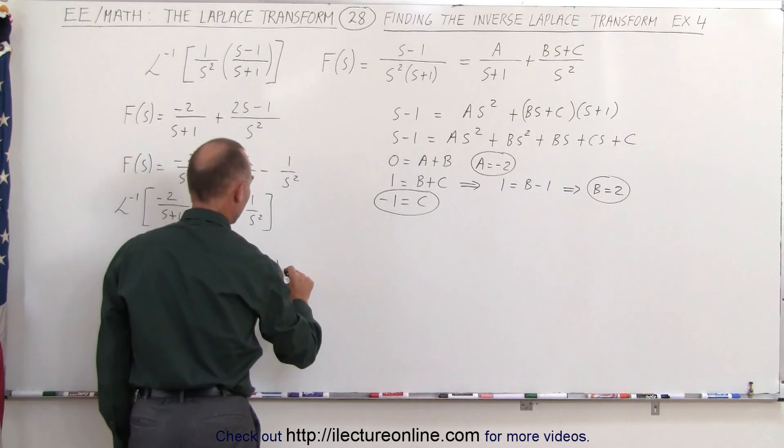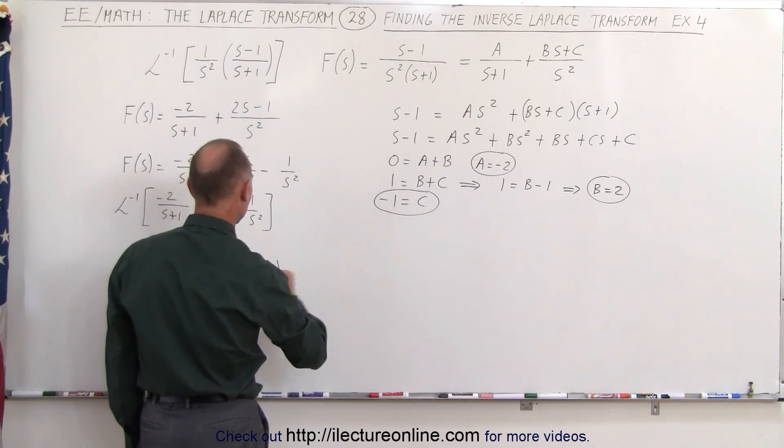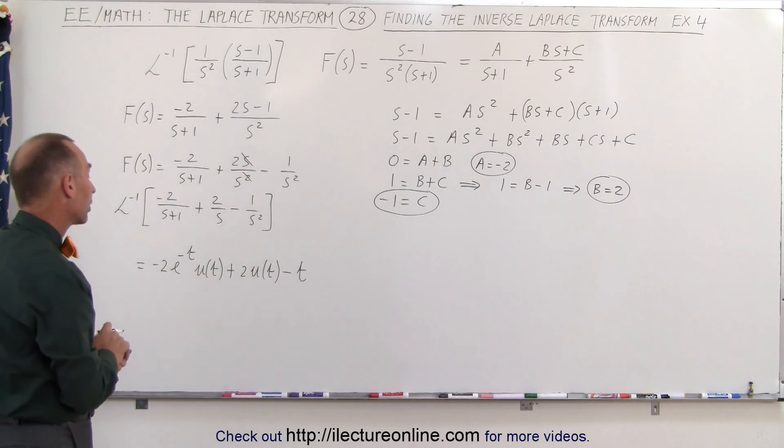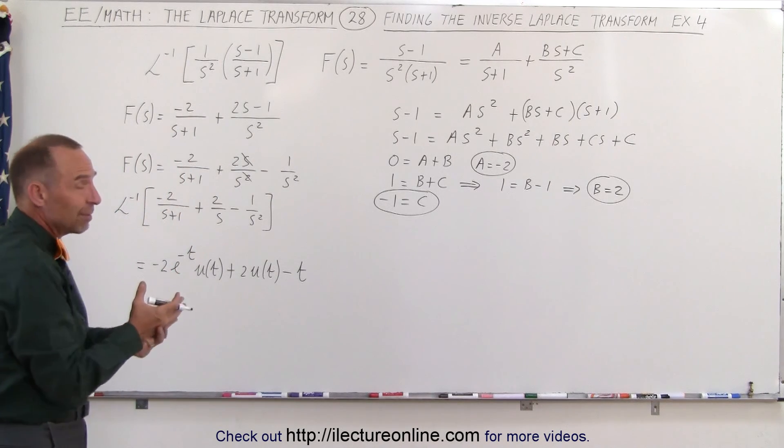This here would be plus two times one over s, which is two times the unit step function, and minus one over s squared, that would be simply minus t.